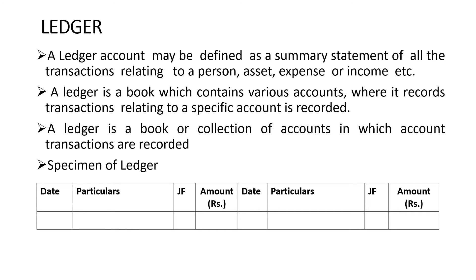This is the specimen of a ledger, which has 8 columns — 4 columns under the debit side and 4 columns under the credit side. Under the debit side: date, particulars, JF (journal folio), and amount. Under the credit side: date, particulars, JF, and amount.